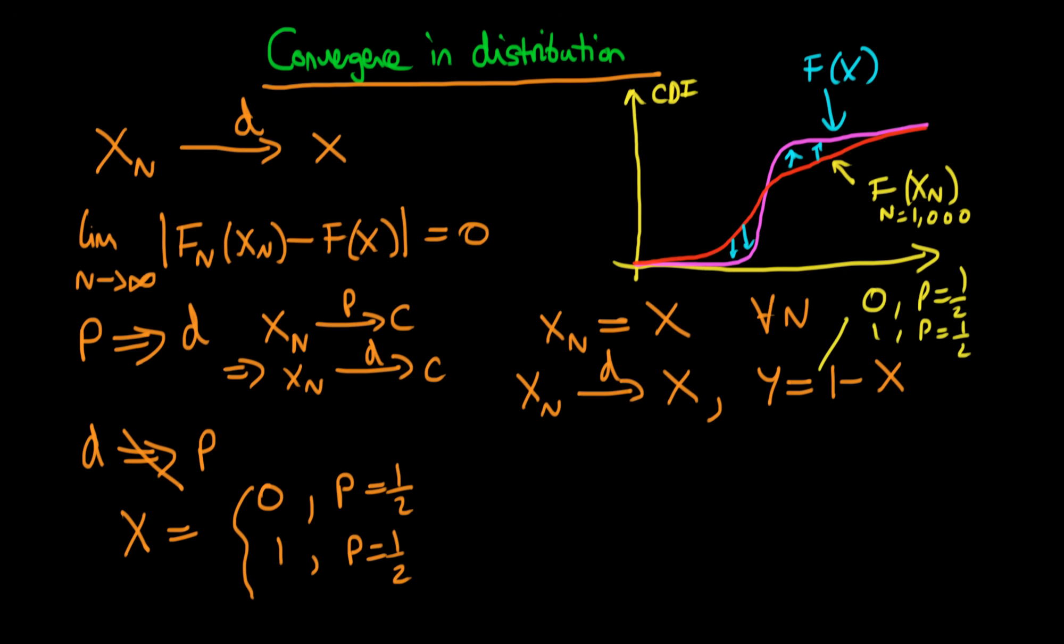So trivially we can see that in this particular case we have the Xn tends in distribution to that of Y. However on examination it is not the case that Xn tends in probability to that of Y.